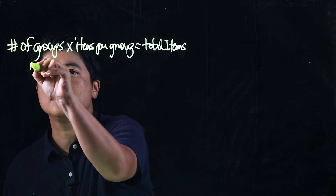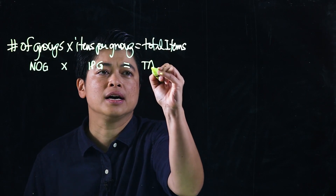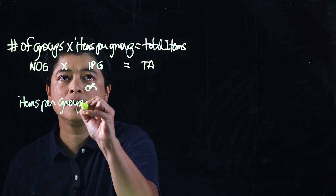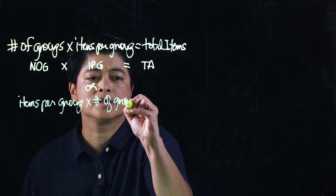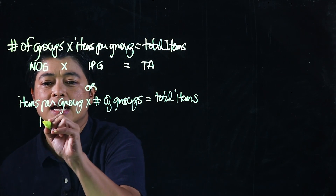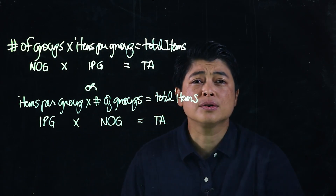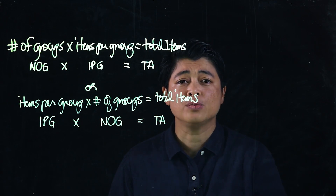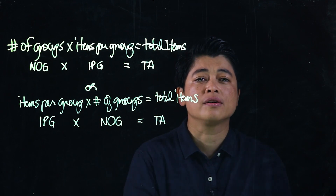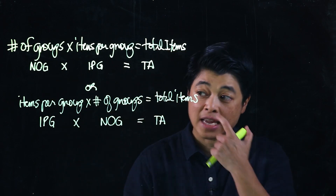So we will call this: number of groups times items per group equals total items. It could also be items per group times number of groups equals total items. In order for our kids not to be confused, it's best to follow the first formula, however the book covers both. This is in preparation for the different multiplication tables — eventually we will be working with all three of these elements.